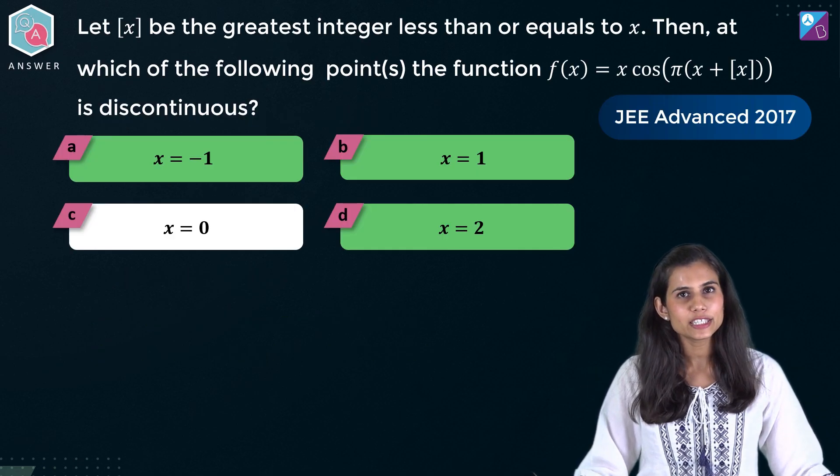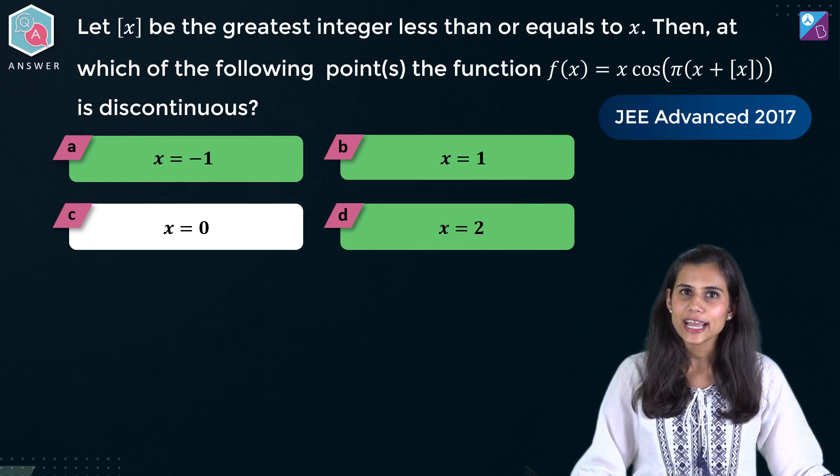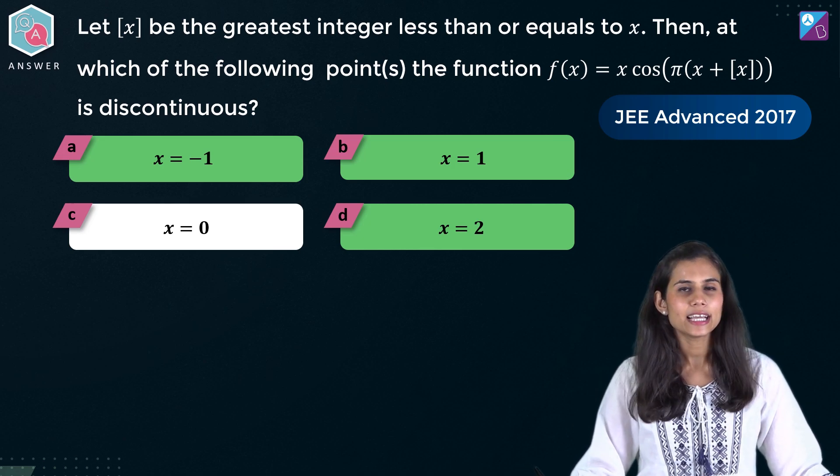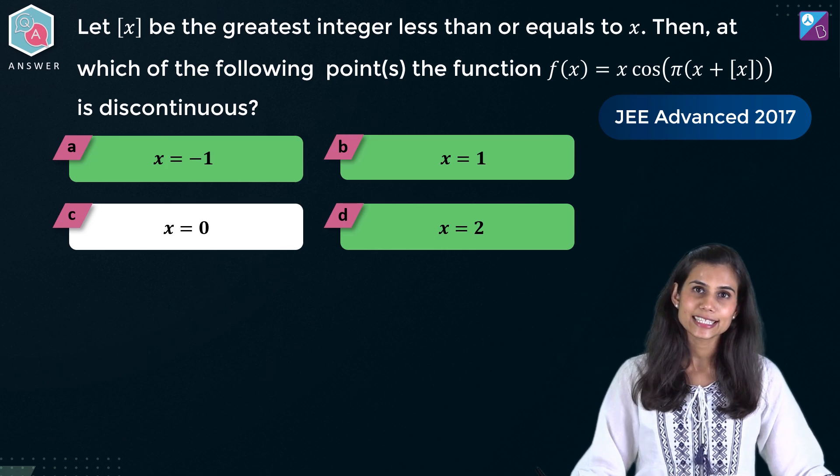So what are the points of discontinuity for f? 1, minus 1 and 2. That's why a, b and d are the right options and c is incorrect.